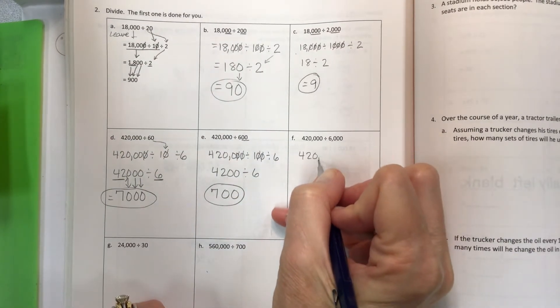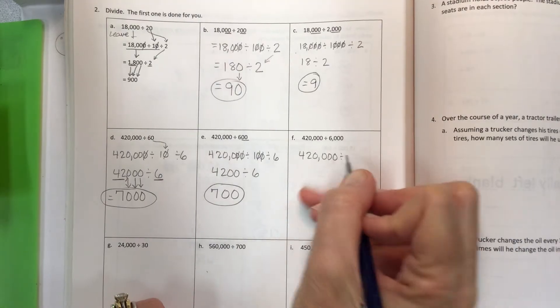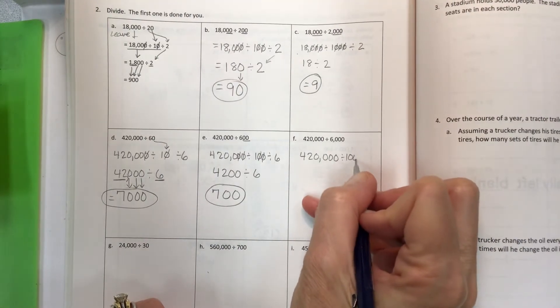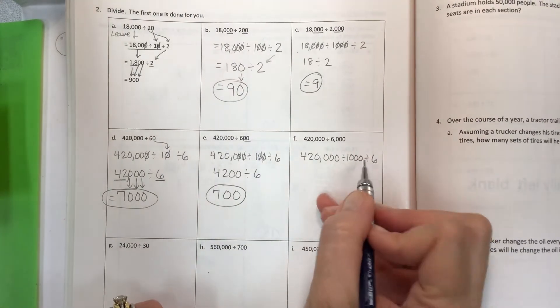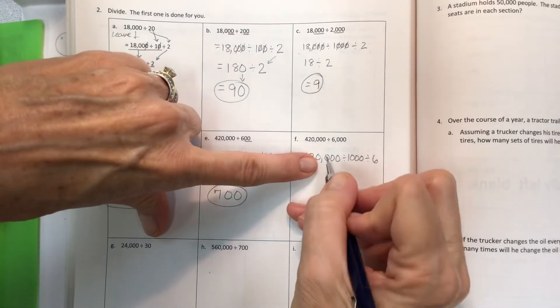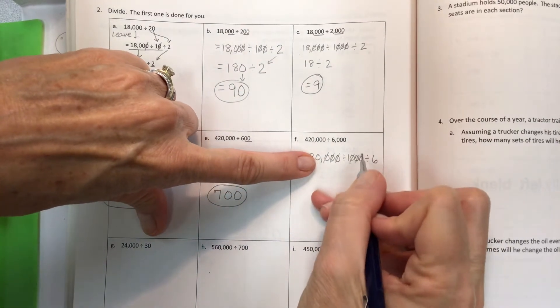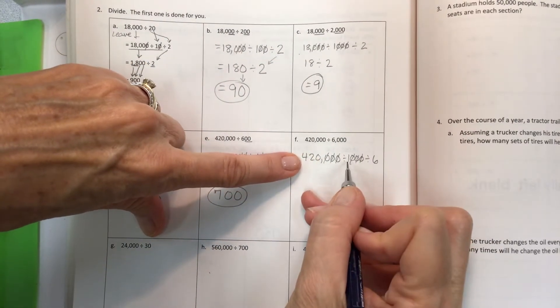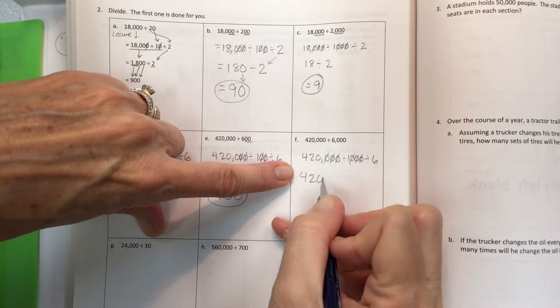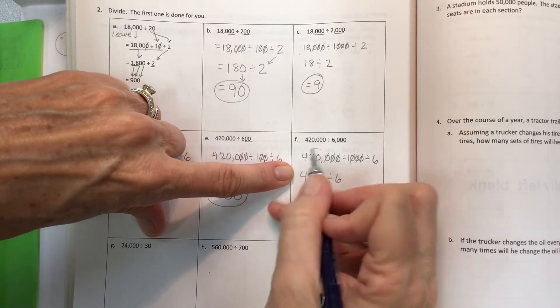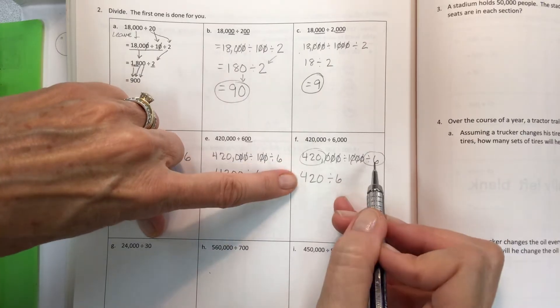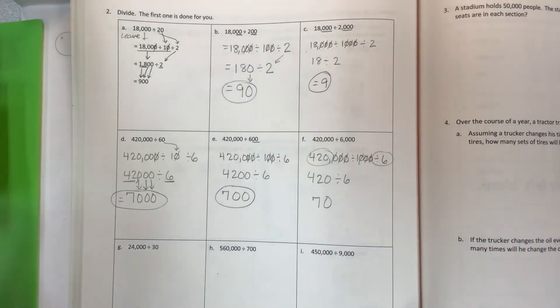Last one here: 420,000 divided by 6,000. So it's 1,000 first, then 6. Take off the zeros, 1, 2, 3 on each side, which leaves you divided by 1. That leaves us with 420 divided by 6. That gives you 7 and a 0 for 70.